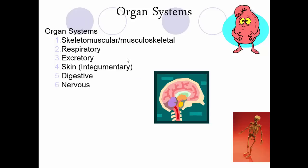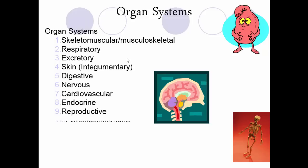The digestive system gets your food digested. The nervous system allows electrical signals to be sent throughout your body. The cardiovascular system — your heart, veins, and arteries — keeps blood pumping to transport nutrients. The endocrine system gets hormones flowing through your glands. The reproductive system is where sperm and eggs are formed for reproduction. The lymphatic and immune systems are often lumped together — many components of the immune system are formed in the lymphatic system. When you get sick, your lymph nodes swell because they're producing blood cells to fight off infection.